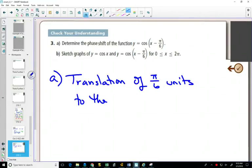And since it's inside the function, it's going to be a horizontal translation. And that minus π over 6 will move it π over 6 to the right, just like our transformations unit from before.